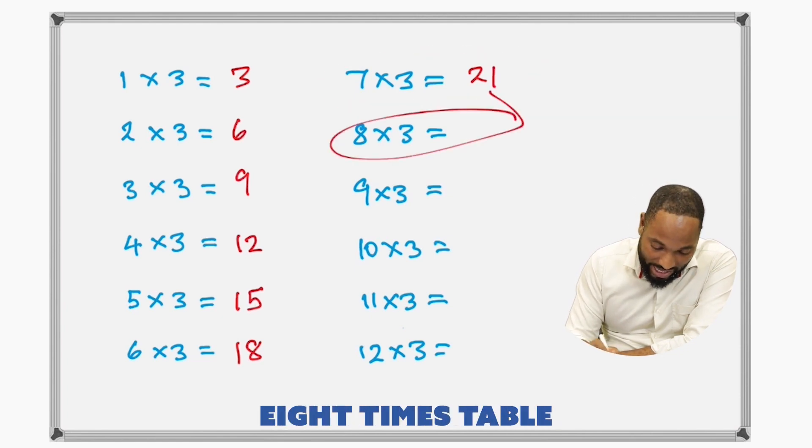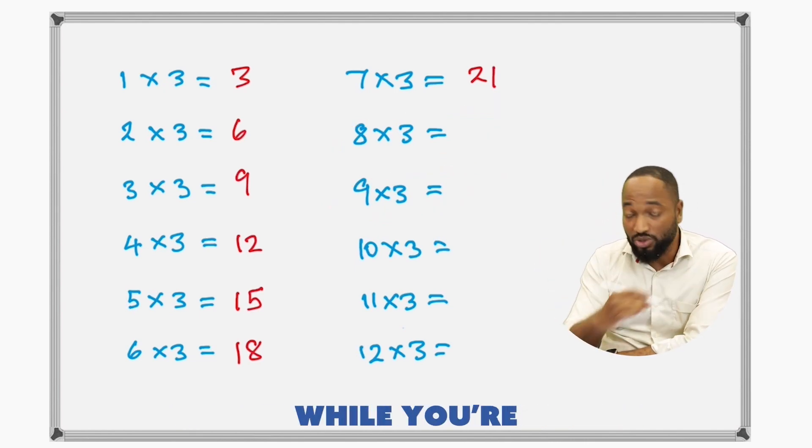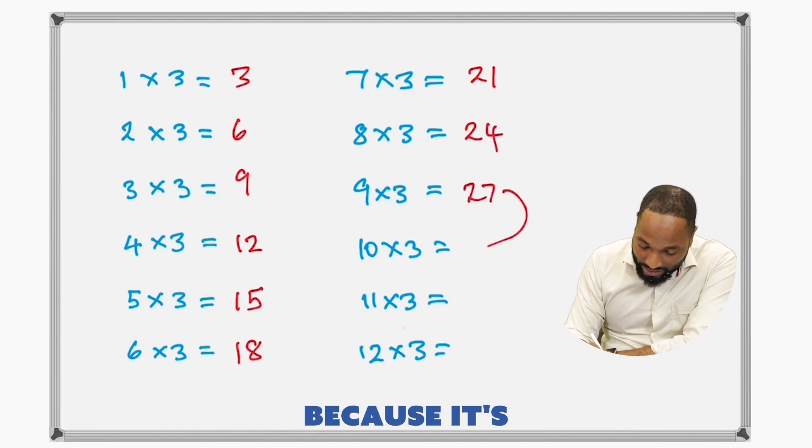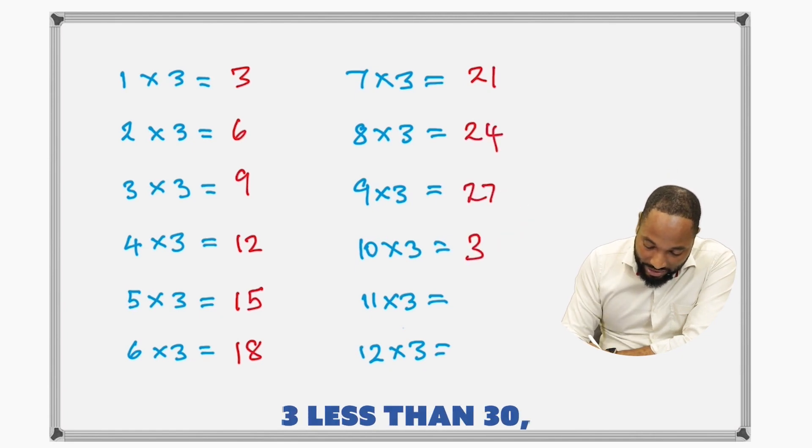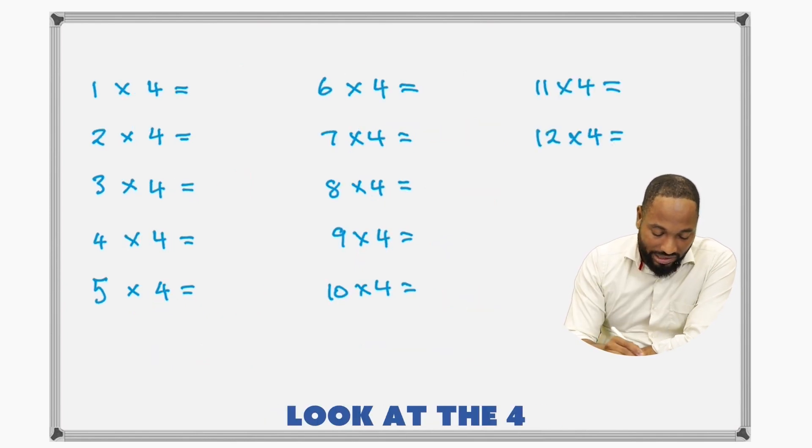So sometimes you can see other tables coming off. This is the 8 times table, this is the 9 times table, and that can help you memorize different tables whilst you learn one. 8 times 3 are 24, 9 times 3 are 27 because it's 3 less than 30 which is 10 times 3. And 11 times 3 are 33 and 12 times 3 are 36.